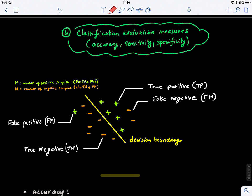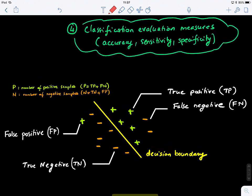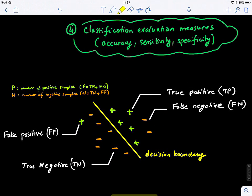So here, what do we have? We have a set of points. These are the positive samples. So this is actually the positive space, and this is the negative space because the majority of the negative samples they lie in this space.